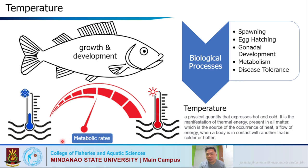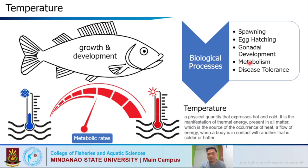As temperature increases, metabolic rates also increase. Most fish show loss of appetite when temperature is too low. Spawning varies between species. For egg hatching, 20 to 24°C is the desirable range, though 29°C has been reported as optimum for a few species. Gonadal development falls between 18 to 24°C, with 22°C being best. Metabolism increases with temperature, and disease tolerance is also affected by temperature changes in the culture environment.